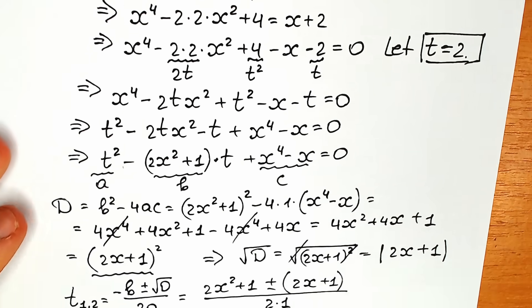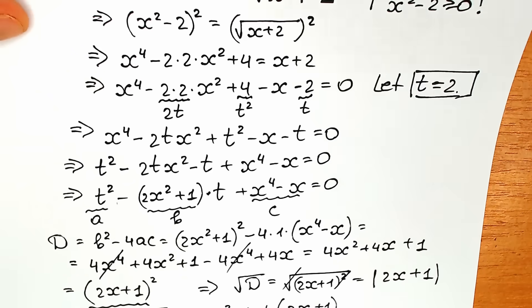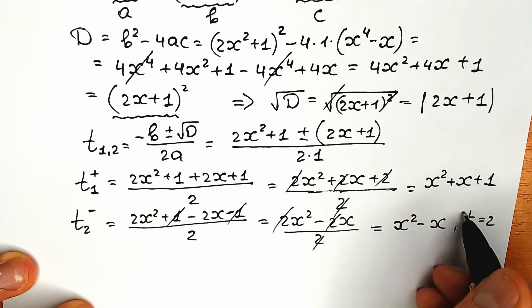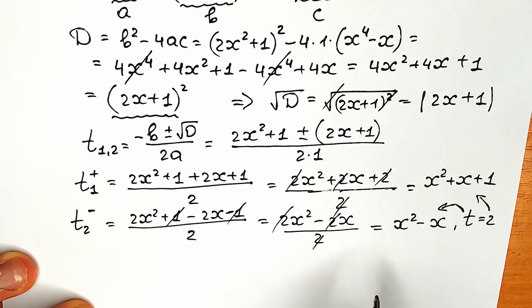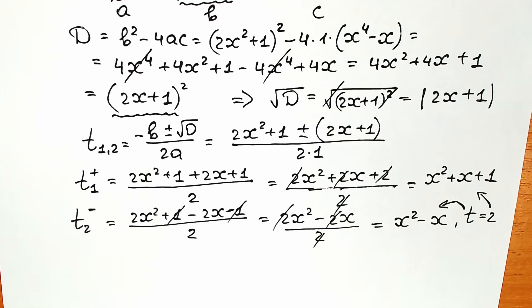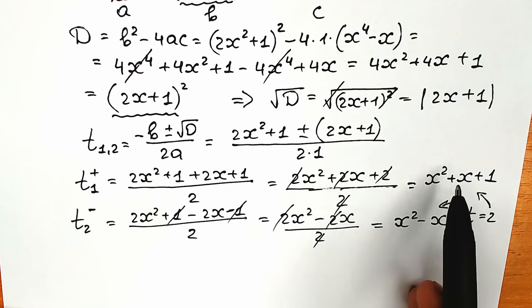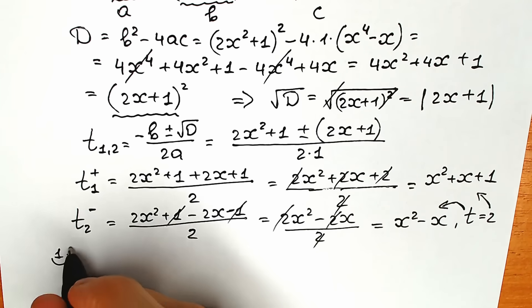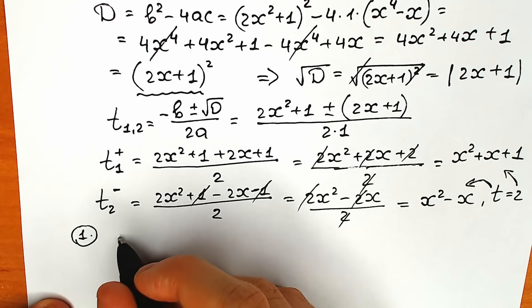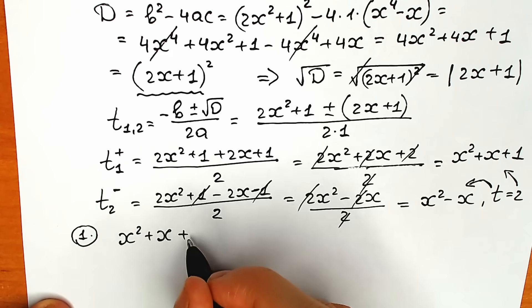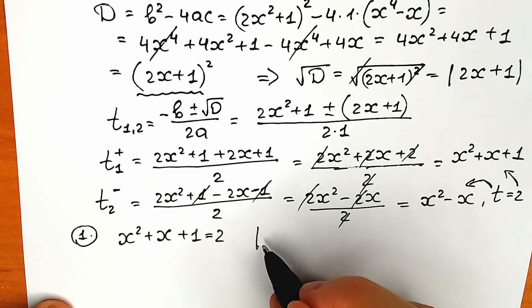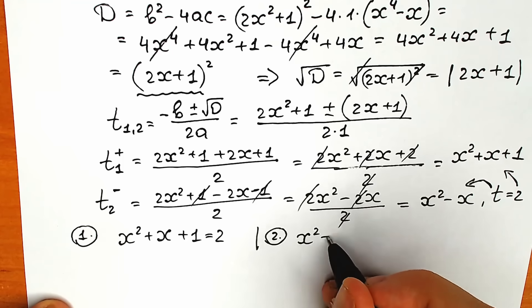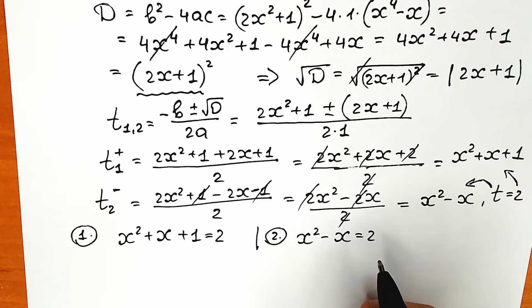Don't forget our substitution: t equals 2. So we apply it to both results. Since t₁ = x² + x + 1 and t₂ = x² − x, and t = 2, we get two cases: case one is x² + x + 1 = 2, and case two is x² − x = 2.